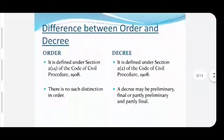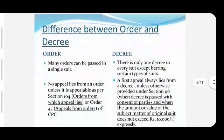Next difference: an order is defined under section 2 clause 14 of the Code, while a decree is defined under section 2 clause 2 of the Code. There is no distinction between orders, while a decree can be divided into preliminary decree, final decree, or partly preliminary and partly final decree. Further, there can be many orders passed in a single suit, while only one decree is passed in every suit, with some exceptions.